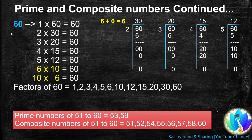Next, 60. 1 is a factor of every number, so 1 times 60 equals 60. 60 is a multiple of 2 because the ones digit is even. When we divide 60 by 2, we get quotient 30, so 30 is another factor of 60, and 2 times 30 equals 60. 60 is also a multiple of 3.